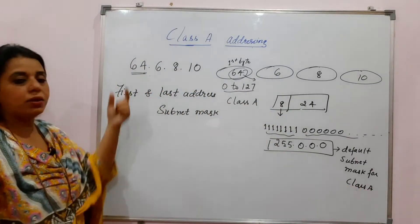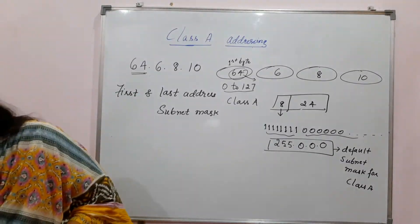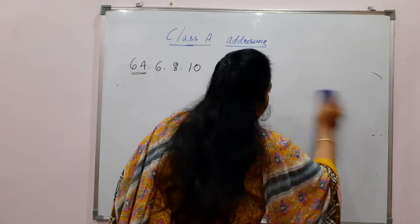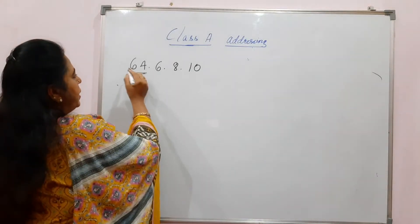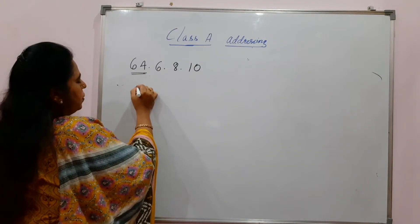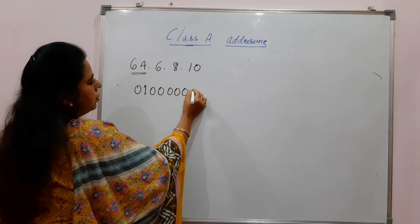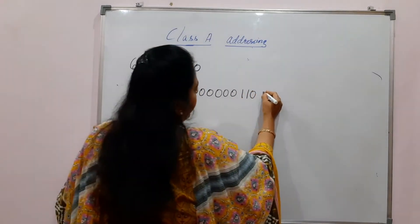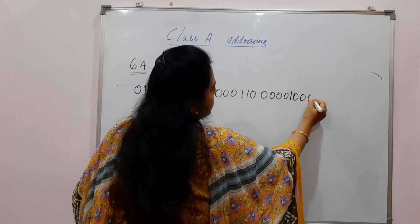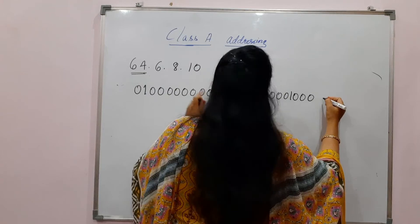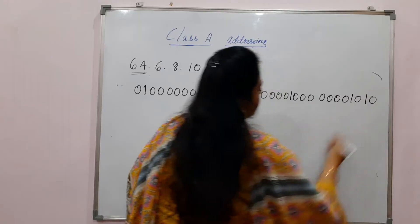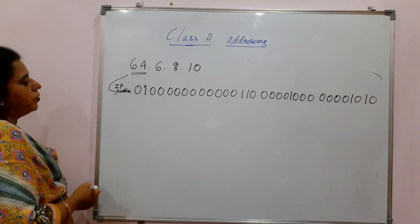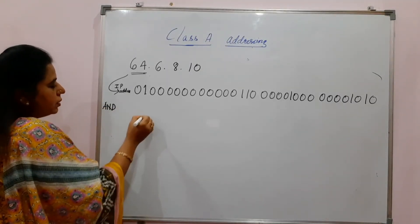With this default subnet mask, you can determine the first and last address. Take the given IP address and first convert it to binary — that is, convert the dotted decimal notation into binary. In this case, the first byte is 64. The next is 6 in binary, after that 8, and the last byte is 10. You then perform a bitwise AND operation with the default subnet mask 255.0.0.0.